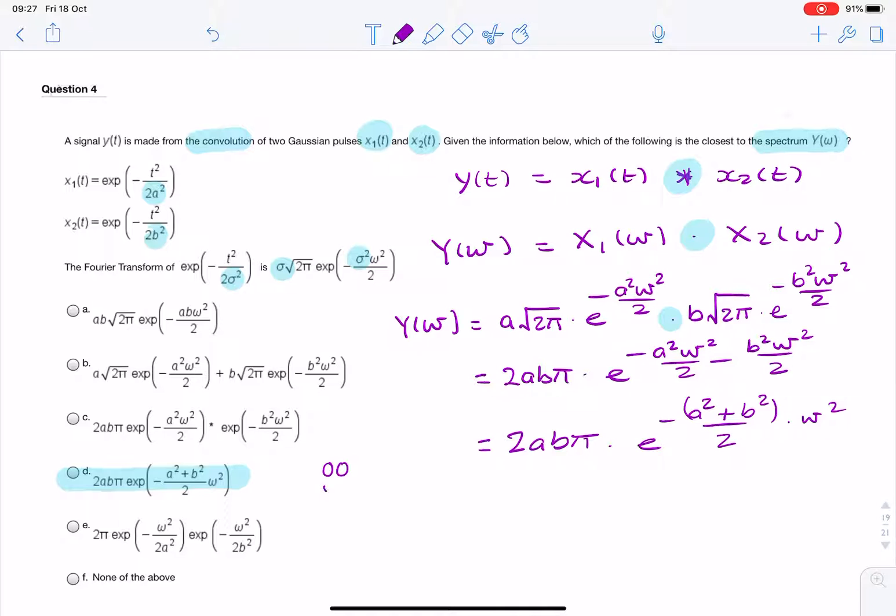So that would be your final answer. So we answered it by using the convolution property. The key was in the question. We were told there was a convolution happening. And the question was asking for the spectrum of the convolution. So we immediately used the convolution property.